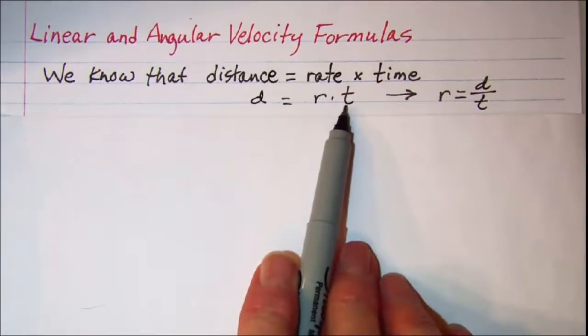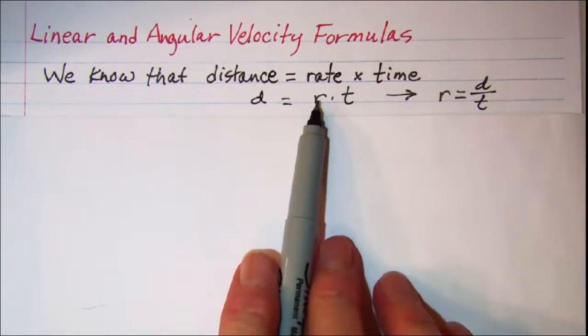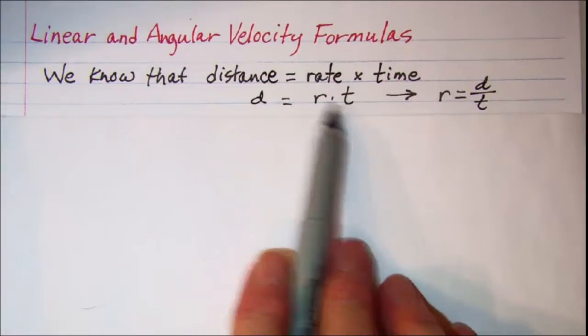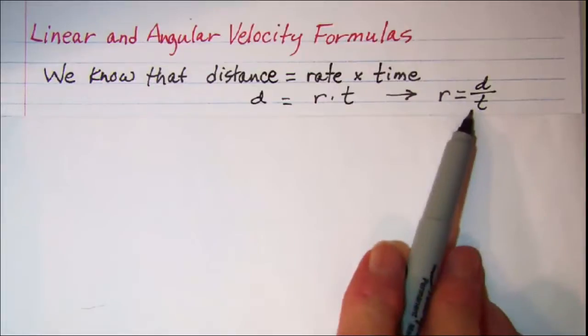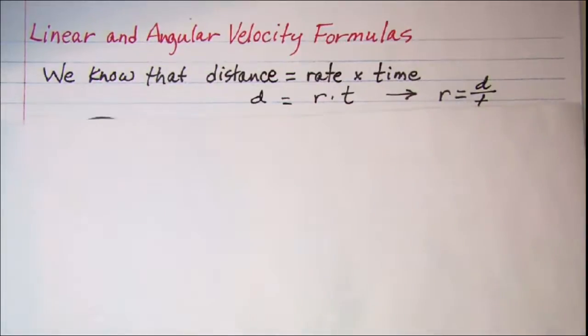And if we are looking for the rate of speed, or the rate of the velocity, then we can divide both sides by t and get rate is equal to distance divided by time.